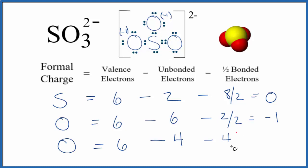So we have four, but we divide that by two. Six minus four is two, minus two is zero. So this oxygen has a formal charge of zero. So at this point, these two oxygens here, their formal charge is minus one.